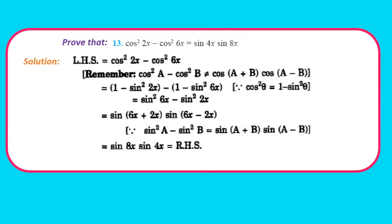Question 13: Prove cos²2x − cos²6x = sin4x·sin8x. Rewrite: cos²2x = 1 − sin²2x and cos²6x = 1 − sin²6x, so LHS becomes sin²6x − sin²2x. Applying the identity sin²A − sin²B = sin(A+B)·sin(A−B): sin(6x+2x)·sin(6x−2x) = sin8x·sin4x, which equals our RHS. Pause and note down the solution.